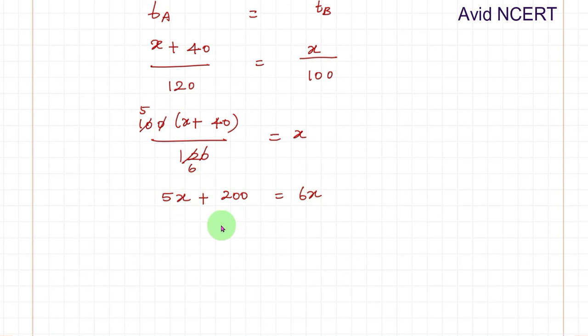So 5x plus 5 times 40 is 200 equals 6x. Grouping x together, taking 5x to the other side.